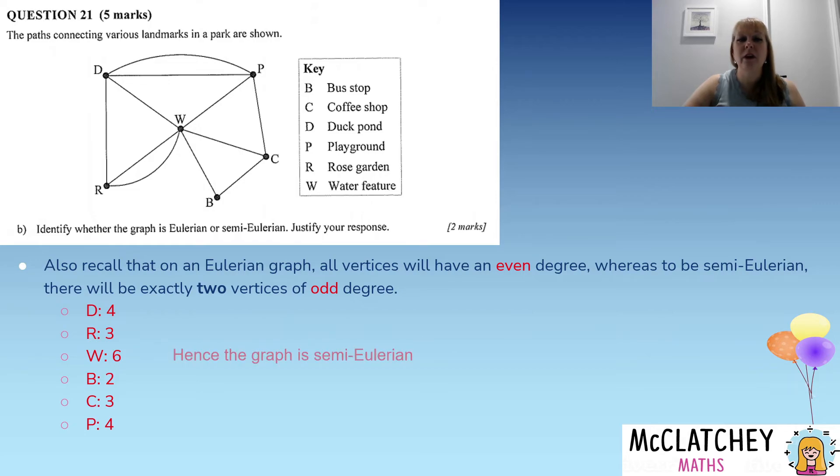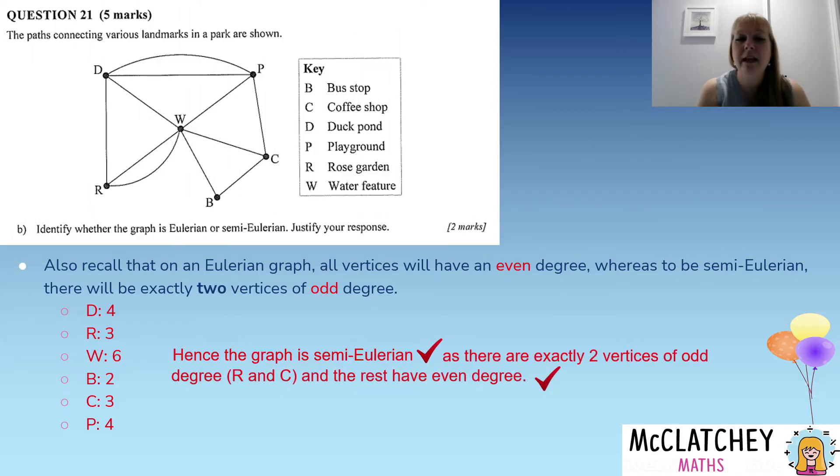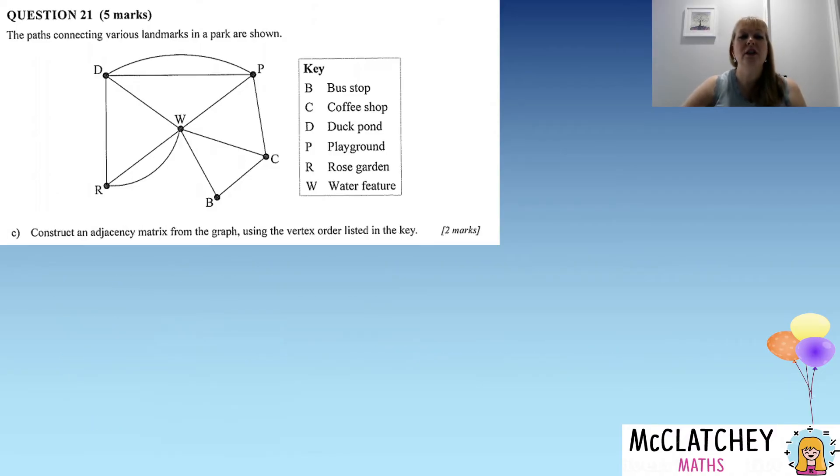So we've now identified that it's semi-Eulerian and we've got our justification at the top, which is our second mark. So it's important to write a statement at the end: hence the graph is semi-Eulerian as there are exactly two vertices of odd degree, R and C, and the rest have an even degree. So now we've got our two marks.